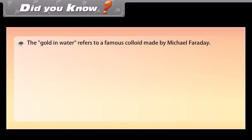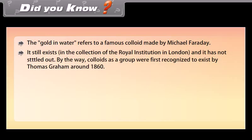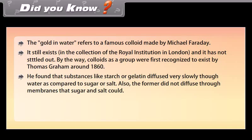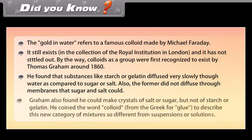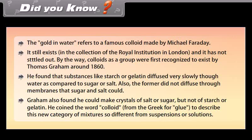The gold in water refers to a famous colloid made by Michael Faraday. It still exists in the collection of the Royal Institution in London and has not settled out. Colloids as a group were first recognized by Thomas Graham around 1860. He found that substances like starch or gelatin diffused very slowly in water compared to sugar or salt, and did not diffuse through membranes that sugar and salt could. Graham also found he could make crystals of salt or sugar but not of starch or gelatin. He coined the word 'colloid' from the Greek for glue to describe this new category of mixtures, so different from suspensions or solutions.